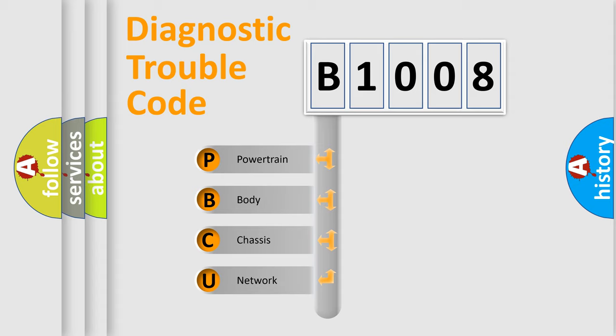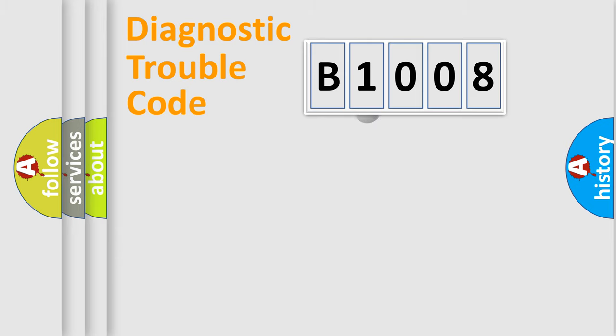We divide the electric system of automobiles into four basic units: Powertrain, Body, Chassis, and Network. This distribution is defined in the first character code.